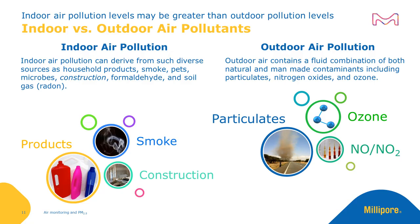Certain air pollutants occur more frequently indoors than outdoors, and vice versa. Indoor air pollution levels may actually be greater than outdoor pollution levels and pose a greater risk to personal safety. Indoor air pollutants can include household products, smoke, pet dander, microbes, construction byproducts, formaldehyde, and radon. Outdoor air pollution is more likely to contain particulates as well as molecular contaminants like nitrogen oxides and ozone.